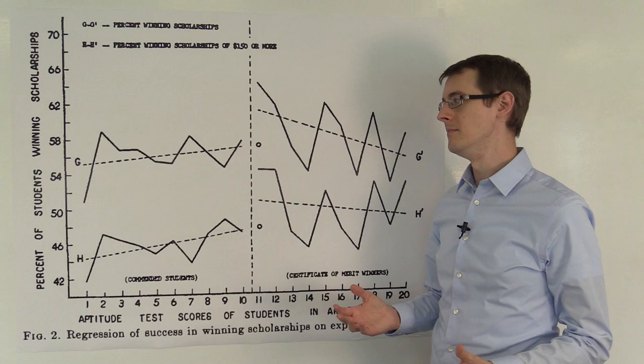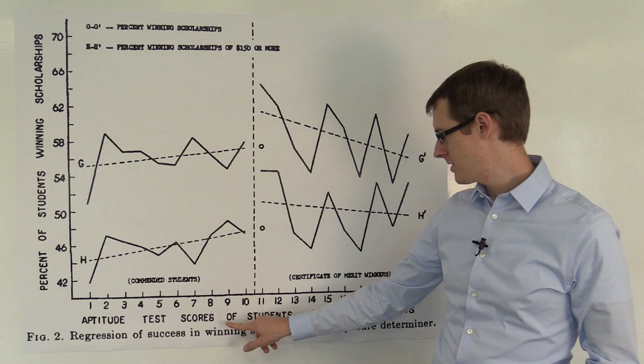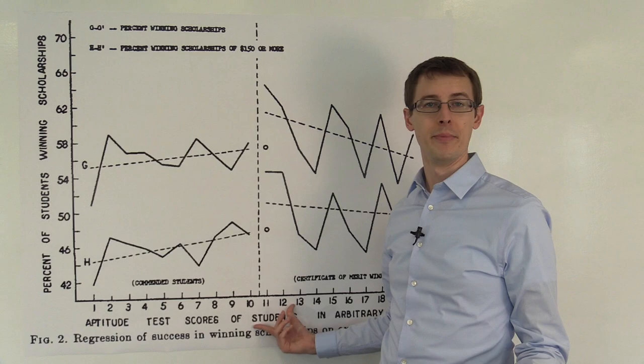So, let's go look at the data and see what they found. So, here's the first main results from the Thistlethwaite and Campbell paper. Over here on our horizontal axis, we've got aptitude test scores of students in arbitrary units. So, this is their PSAT test score, basically.